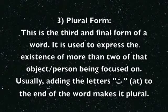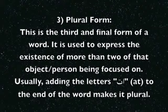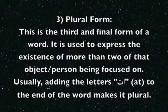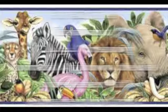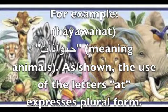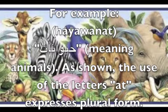3. Plural form. This is the third and final form of a word. It is used to express the existence of more than two of that object or person being focused on. Usually, adding the letters 'at' to the end of the word makes it plural. For example, 'hewanat,' meaning animals. As shown, the use of the letters 'at' expresses plural form.